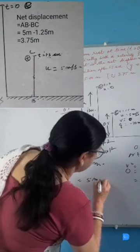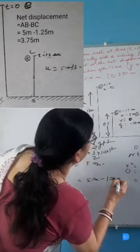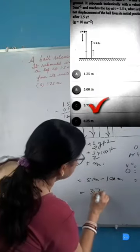The net displacement will be 5 meter minus 1.25 meter, which equals 3.75 meter.